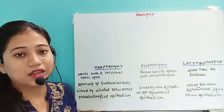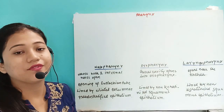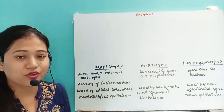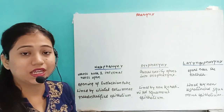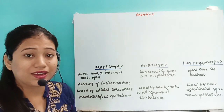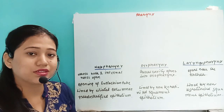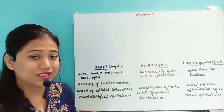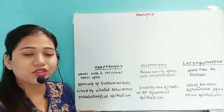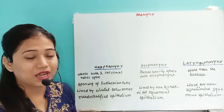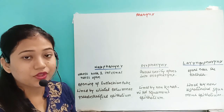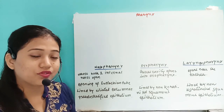In the last video we covered the buccal cavity, which is the first part of the digestive system where we take in food. The teeth grind the food, the tongue mixes the food with saliva, and the saliva is produced by the salivary glands.